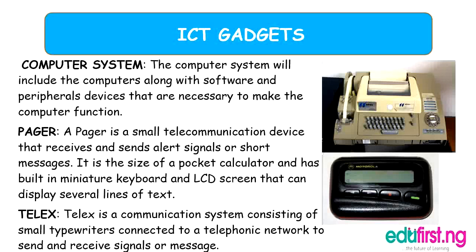Another ICT gadget is the computer system, which I believe we've all seen. Computers are used to create, store, and transfer information. Another gadget is a pager — a small telecommunication device that receives and sends alert signals or short messages. It is the size of a pocket calculator and has a built-in miniature keyboard and LCD screen. You can see it on screen — it's the small black device. There is also the telex, a communication system consisting of small typewriters connected to a telephonic network to send and receive signals or messages.